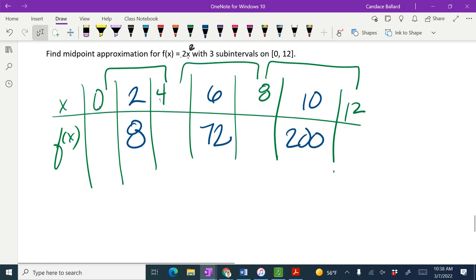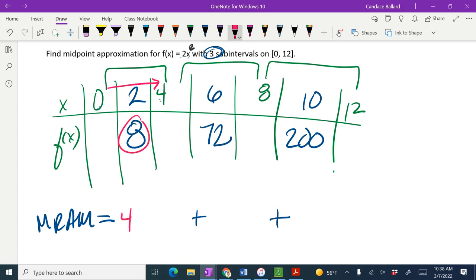All right, so we're gonna do an MRAM. I have three subintervals, so how many plus signs? 2. Good. I'm gonna look at the distance in between my green numbers and use the height of the blue number. My first distance is 4, height is 8. My next distance is 4, height is 72. My next distance is 4, height is 200.